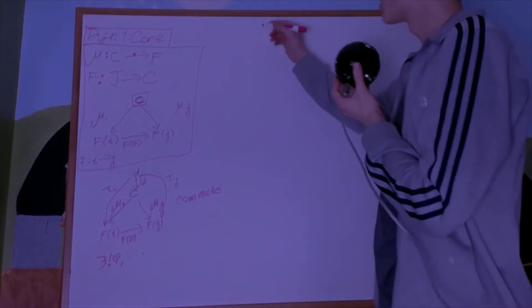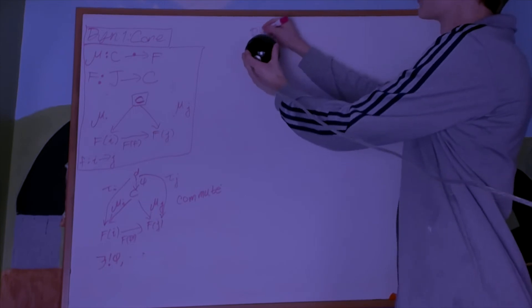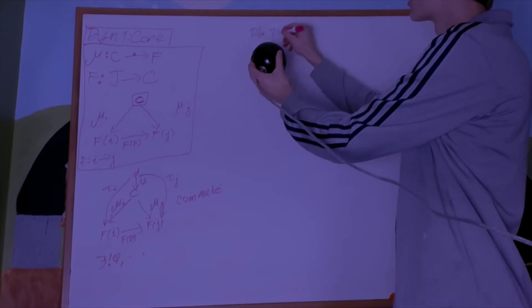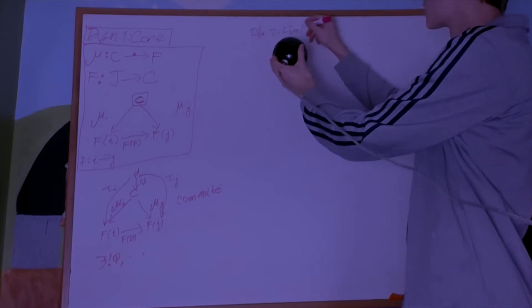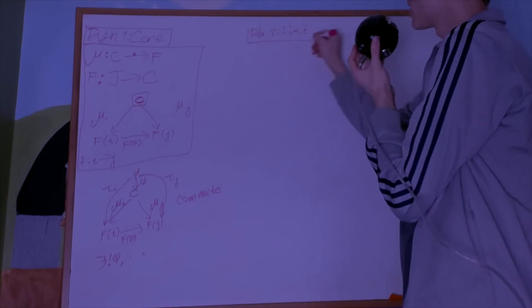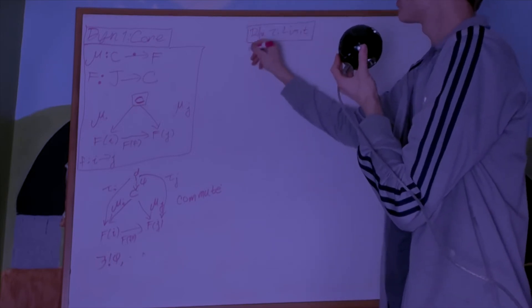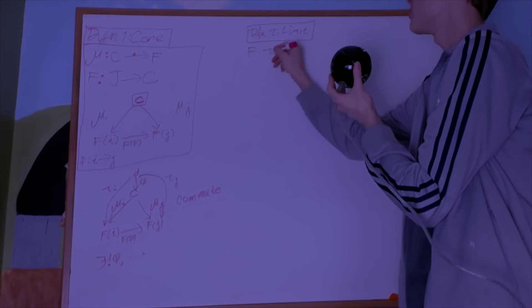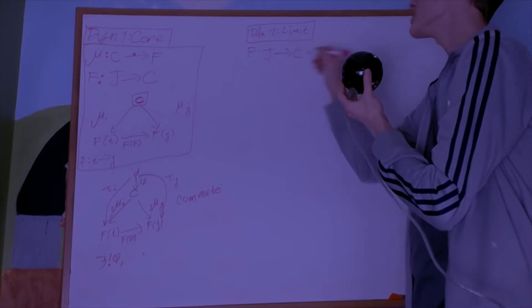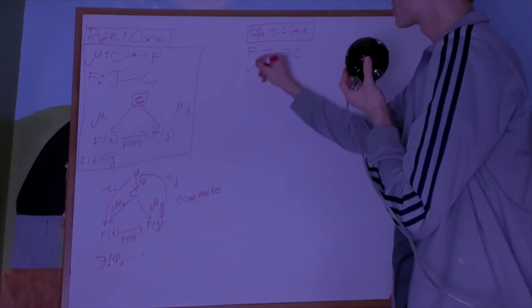All right, now what is a limit? So a limit of a functor F, which is from J to C, is a universal cone.